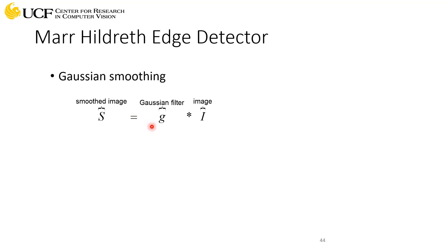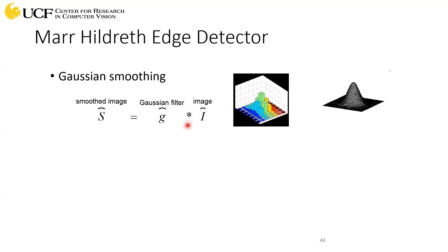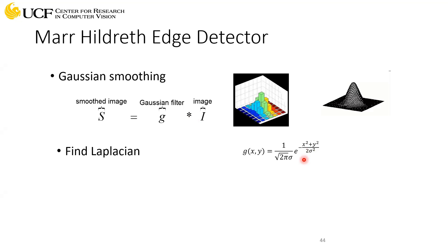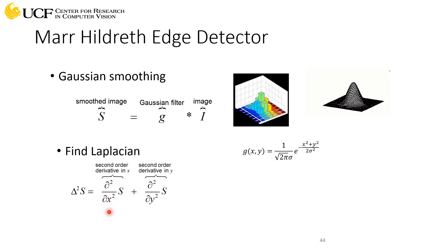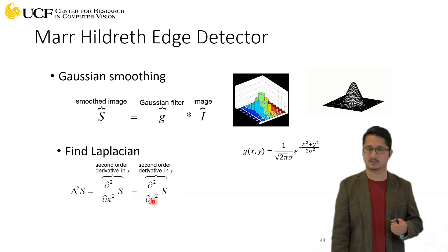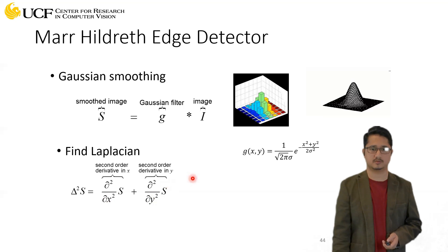Gaussian smoothing — you already know this; you will have your input image, you will have a Gaussian filter, and you perform this filtering operation. You know this is a 2D Gaussian curve, this is the discrete form, and this is the actual filter we use. That's the standard Gaussian equation for a two-dimensional filter. To compute the Laplacian, given the two-dimensional Gaussian, we compute the partial second order derivative in the x direction and the partial second order derivative in the y direction, and we just add these. That's how we compute the Laplacian.